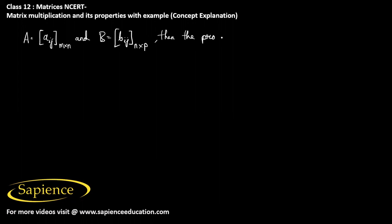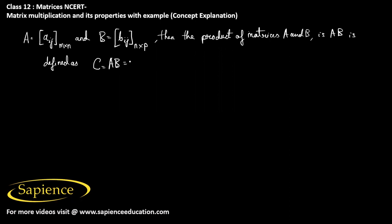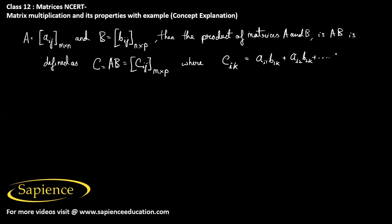The product of matrices A and B, written as AB, is defined as some matrix C, equal to C_ij, of order m×p. The element C_ik equals A_i1 times B_1k plus A_i2 times B_2k, continuing until A_in times B_nk.